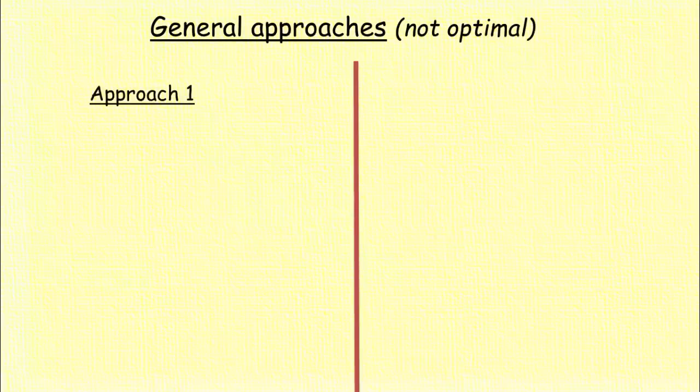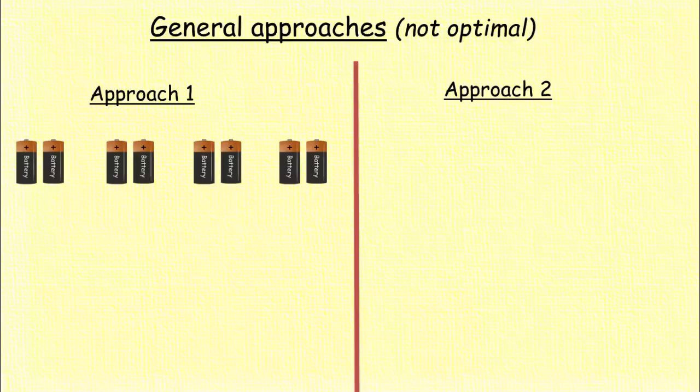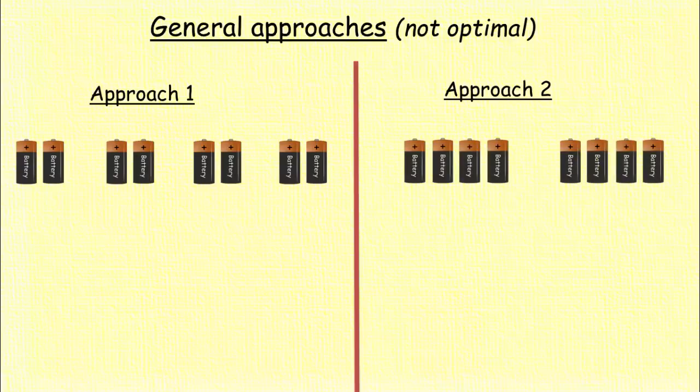There are two approaches that people generally follow but these are not optimal. In first approach, the eight batteries are divided into four pairs. In the second approach, they are divided into two groups of four batteries each.